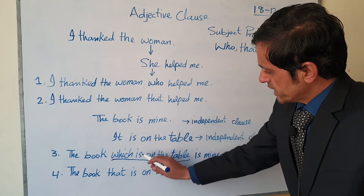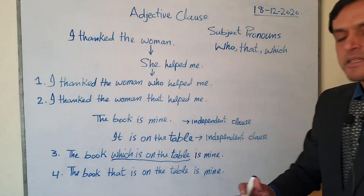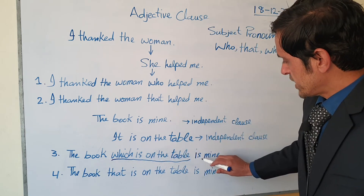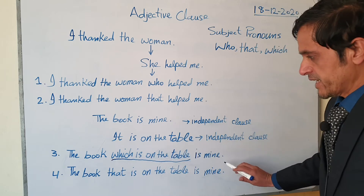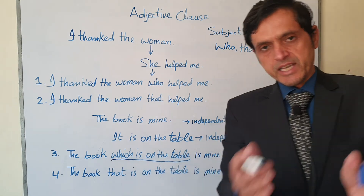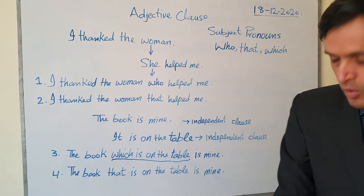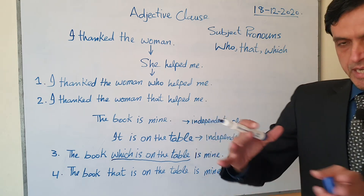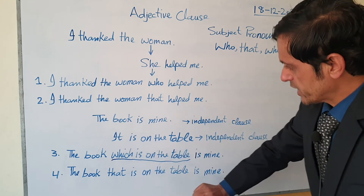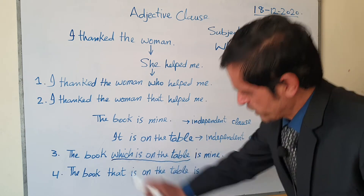In 'the book which is on the table is mine,' 'which' is the subject and 'is' is the verb of the dependent clause, but 'which' is not the main subject. The main subject is in 'the book is mine' — that is the independent clause. 'Which is on the table' is the dependent clause. We can also write: 'The book that is on the table is mine,' using 'that' instead of 'which.'